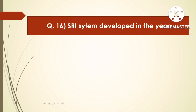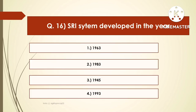The next question is: SRI system was developed in the year — options are 1963, 1983, 1945, or 1993. The right answer is 1983. SRI system was developed in the year 1983.